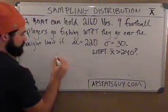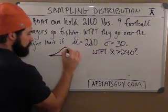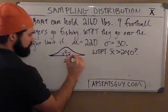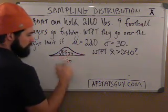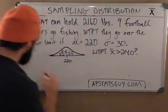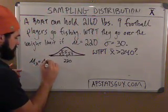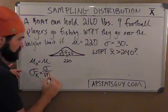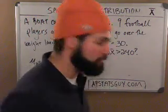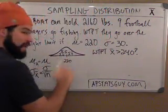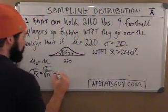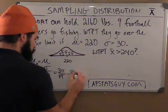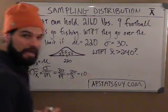Let's think about it. If the mean is 220, our formula sheet gives us that the mean of all the x-bars is just the mean, and the standard deviation of all the x-bars is just the population standard deviation divided by the square root of the sample size. We've got nine football players, so the standard deviation of the sampling distribution is going to be the population standard deviation divided by the square root of nine, which is 30 over 3, which is 10 pounds.